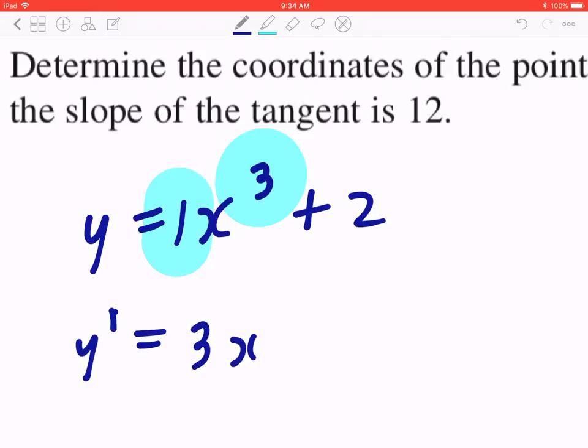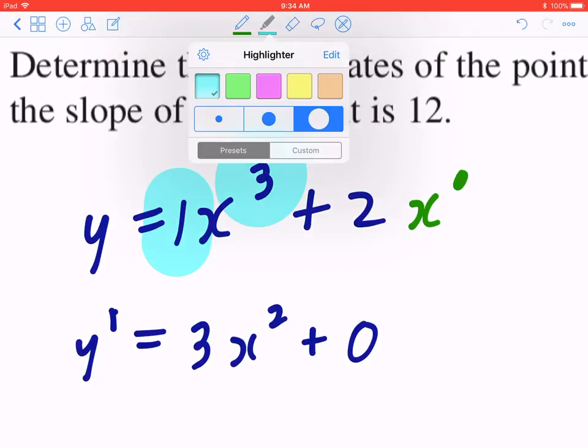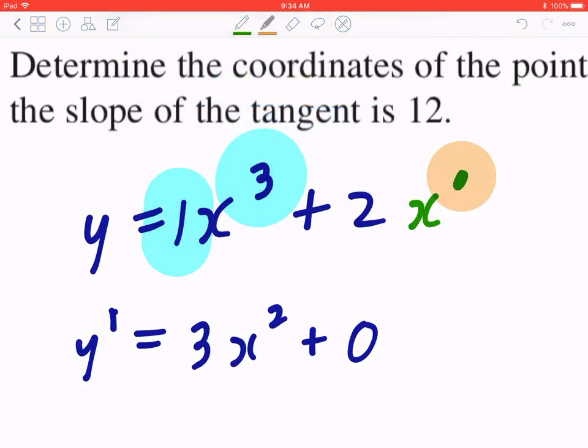You take the exponent and subtract 1, which is 2. Plus, when you find the derivative of a constant, the answer is always going to be 0, but you can still apply the power rule to justify this. For example, 2 is the same as 2 times 1, but 1 is x to the power of 0. You can take the exponent and multiply to the number at the front. 0 times 2 is going to be 0.